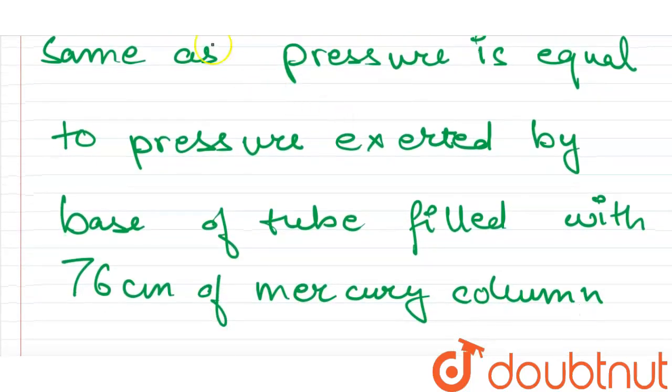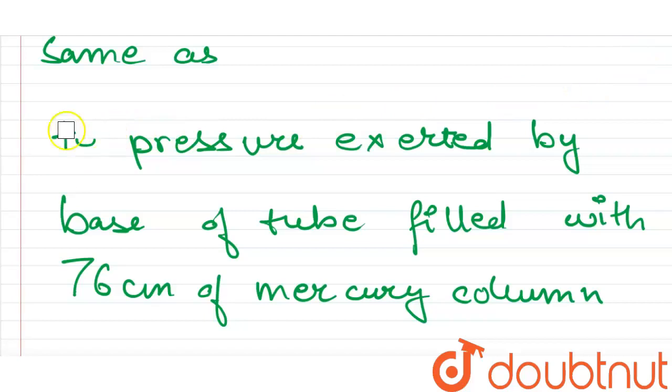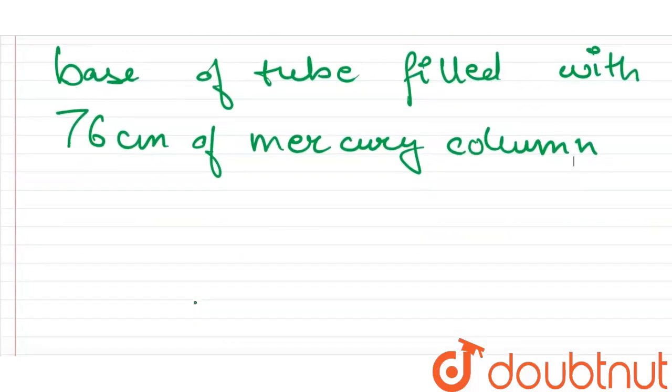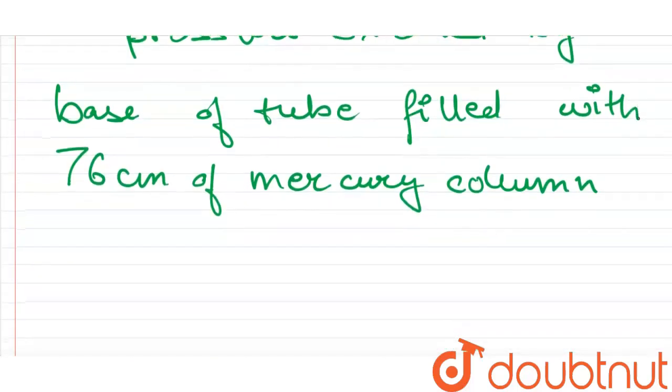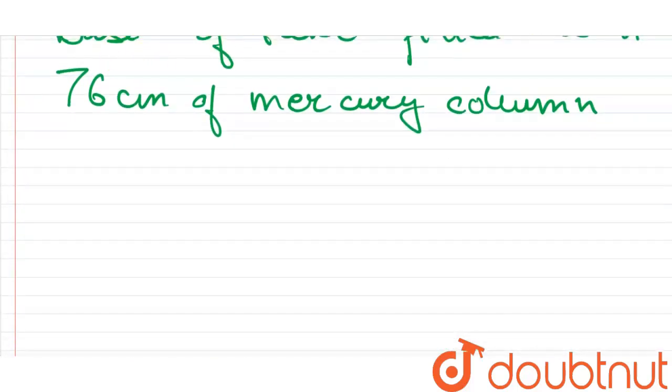76 centimeter of Hg. It is given 76 centimeter. So this is what it is meant by 76 centimeter of Hg. Now to convert this pressure into Pascals,